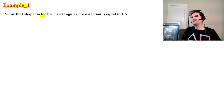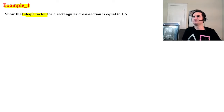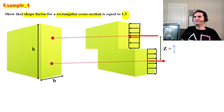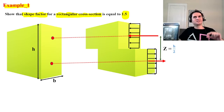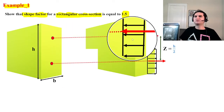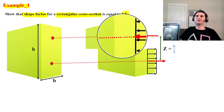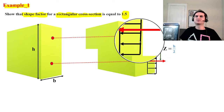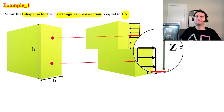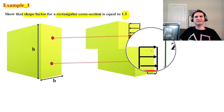We want to show that the shape factor for a rectangular cross-section equals 1.5, as stated earlier. Dividing the section into two parts — one in compression, one in tension — the distance between the centroids of the two sections is lowercase z. If the total height is H, each half has height H/2, and the centroid of each half is at H/4 from the neutral axis. So lowercase z, the distance between the two centroids, equals H/4 + H/4 = H/2.